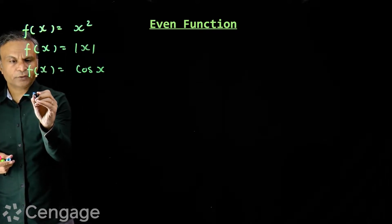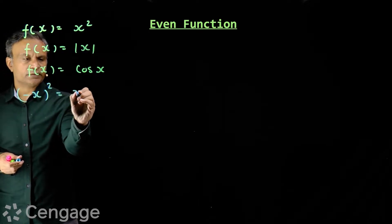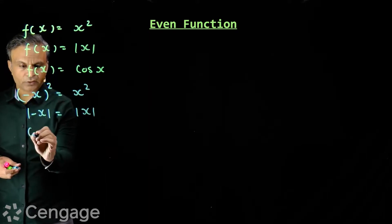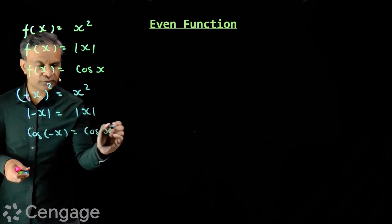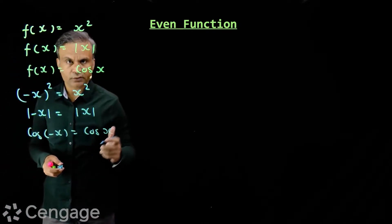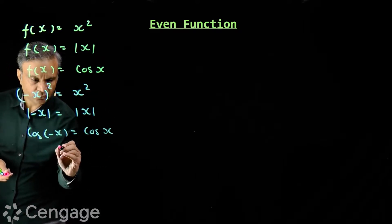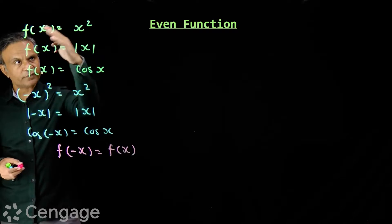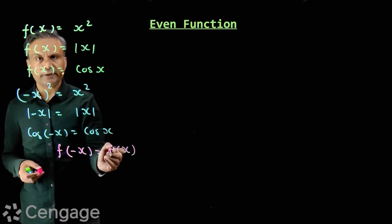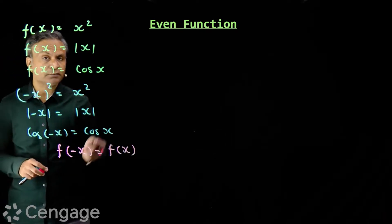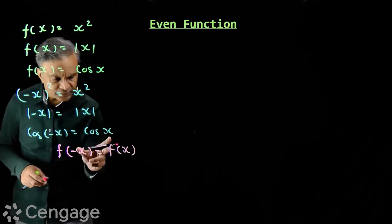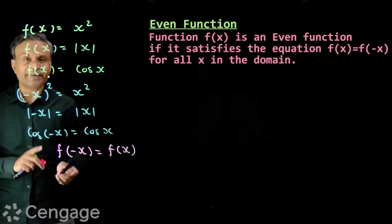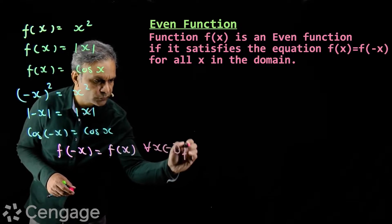We find that (-x)² = x², |(-x)| = |x|, and cos(-x) = cos x. That means all these functions satisfy the equation f(-x) = f(x). Functional values are the same for arguments -x and x. This is the definition of an even function — a function which satisfies f(-x) = f(x) for all x belonging to the domain of the function.